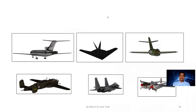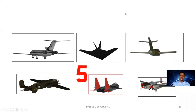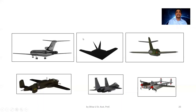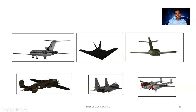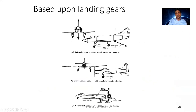In this animation we can see six configurations: the T-tail configuration, the butterfly or V-tail configuration, the cruciform configuration, the H-tail configuration, the twin stabilizer configuration, and the twin boom configuration.